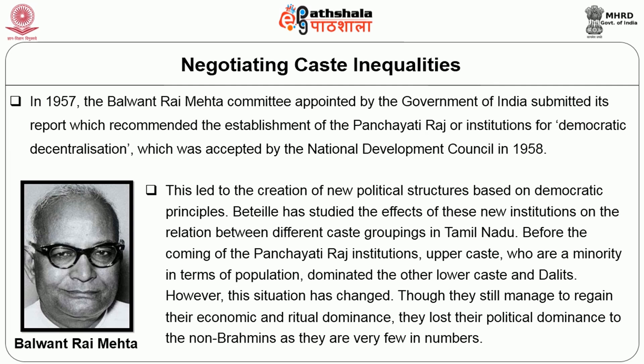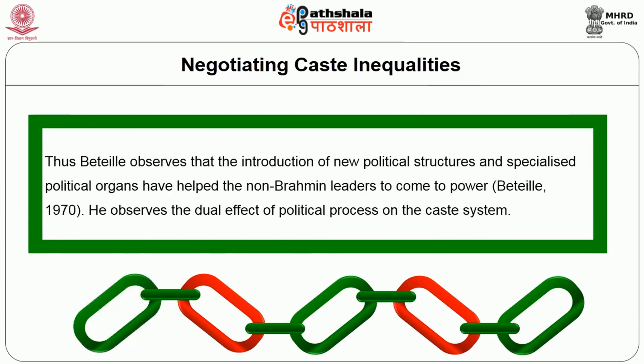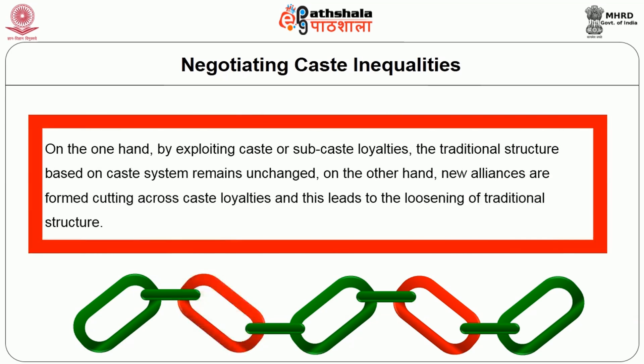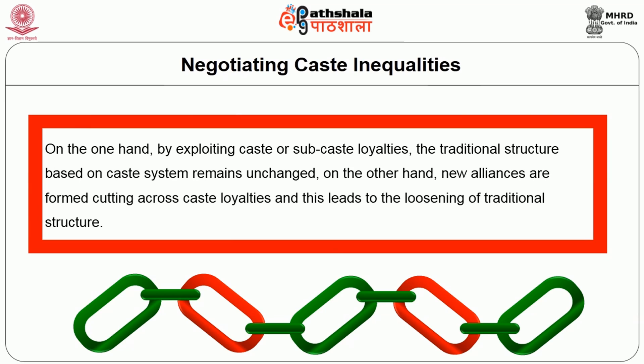Today, though upper castes still managed to regain their economic and ritual dominance, they lost their political dominance to the non-Brahmins as they are very few in number. Thus, Bethe observes that the introduction of new political structures and specialized political organs have helped non-Brahmin leaders to come to power. He observes the dual effects of political processes on the caste system: on the one hand, by exploiting caste or sub-caste loyalties, the traditional structure based on the caste system remains unchanged. On the other hand, new alliances are formed cutting across caste loyalties, and this leads to the loosening of the traditional structure.